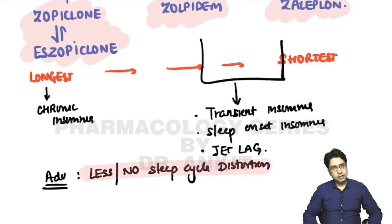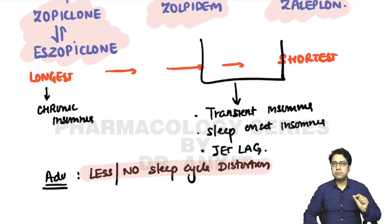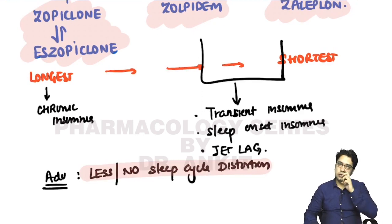The key advantage of Z compounds compared to normal benzodiazepines is that they cause very little or no sleep cycle distortion. That is why these drugs are now the most preferred drugs for the treatment of insomnia.